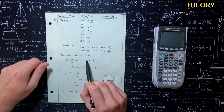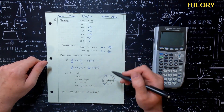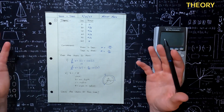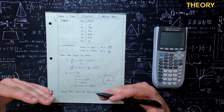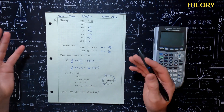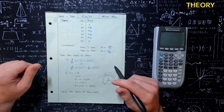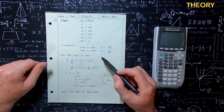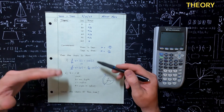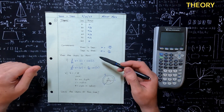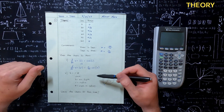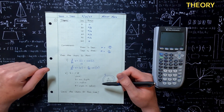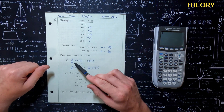A lot of you guys are asking yourself — I know I asked myself when I went through this originally — why do we use radians? I mean, degrees are easy, you learn those even through elementary school. Why don't we just stick to those? The reason that radians are useful in math: the two main reasons I'm going to point out are, number one, if you take derivatives...